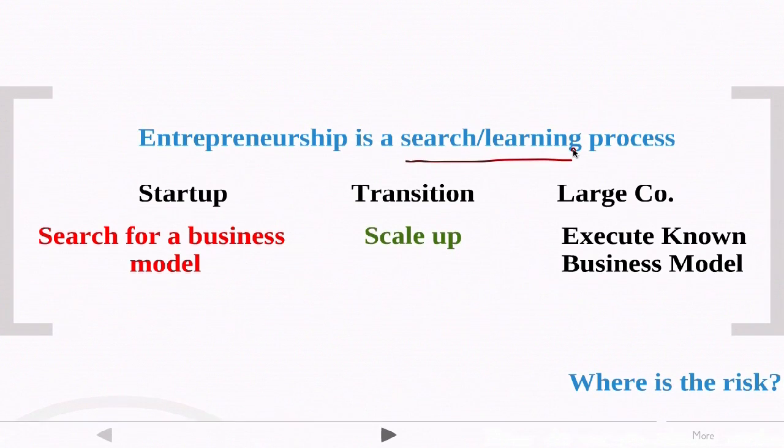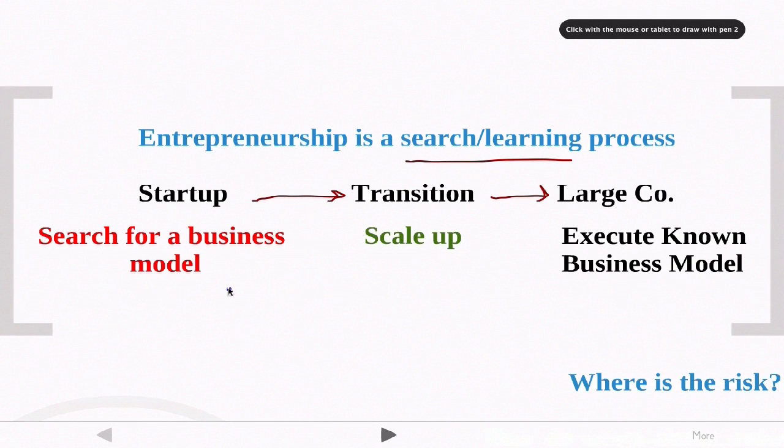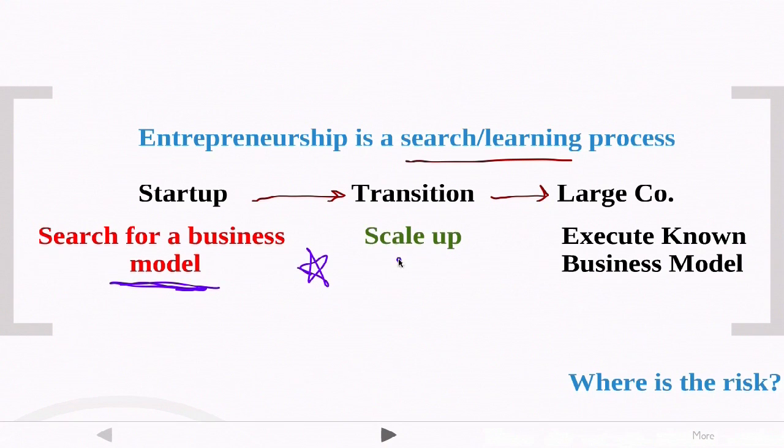And so as I've emphasized in the past, entrepreneurship is a search or learning process. You start out as a startup, you then go through a transition, and eventually you hope to become a large company, at least if you're doing a scalable high growth type of startup. In the startup phase, you're fundamentally searching for a business model. Once you've found that business model, then you want to scale up the organization. You want to make that business model repeatable and scale up the organization to a larger size. You then have become a large company where you're essentially executing on a known business model. So these are the differences. This is why there's a different process, a different type of person, a different methodology when you're in the startup phase from when you're in the large company phase.